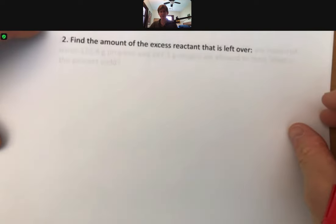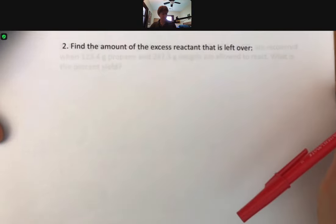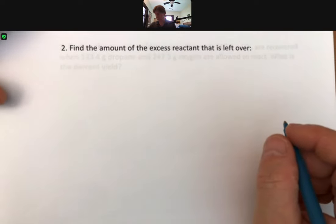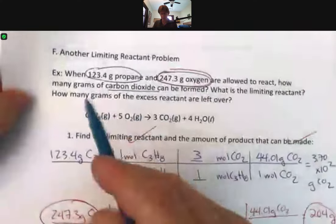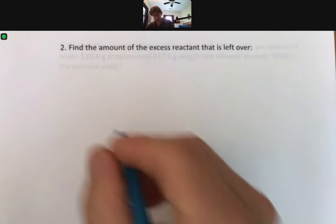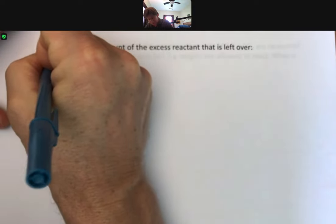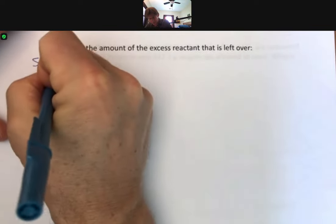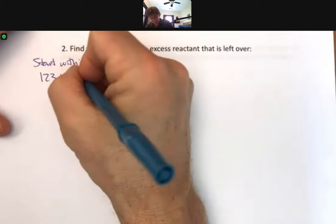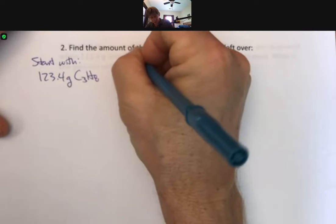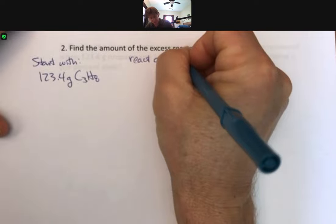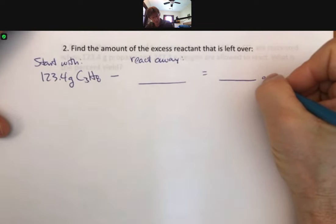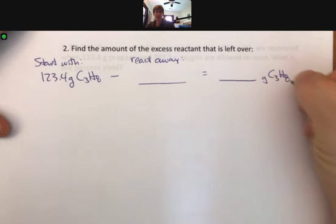Now it says, find the amount of excess reactant that is left over. This we have a process for as well. It says, you know the amount of excess reactant of propane that you started with. Start with 123.4 of propane, react away, and whatever we get here, we're going to subtract equals amount grams of propane left over.